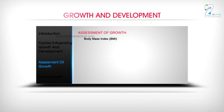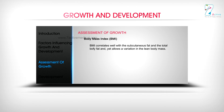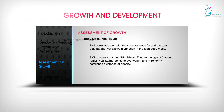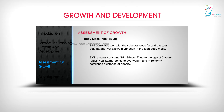Body Mass Index (BMI): BMI correlates well with the subcutaneous fat and total body fat, yet allows a variation in the lean body mass. BMI remains constant at 15–25 kg per m² up to the age of 5 years. A BMI greater than 25 kg per m² points to overweight, and greater than 30 kg per m² establishes the existence of obesity. A BMI less than 15 kg per m² points to malnutrition.